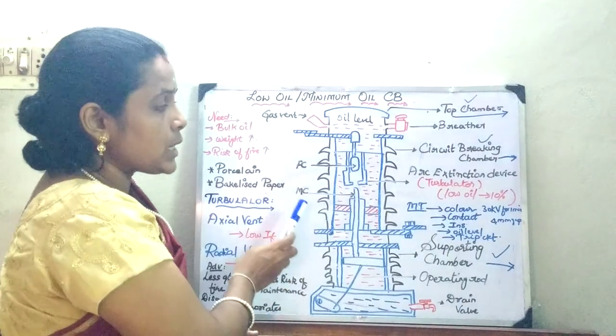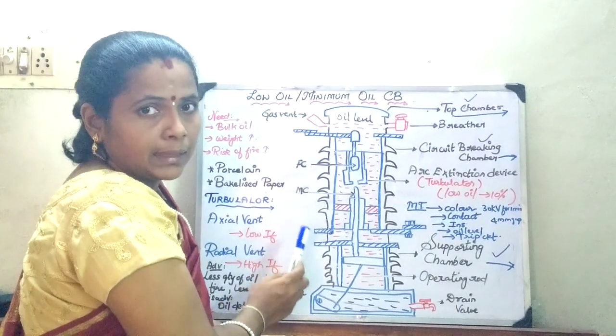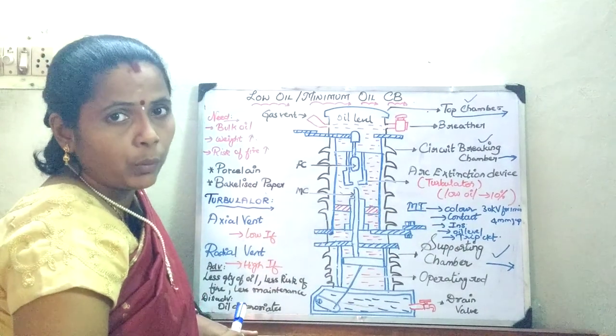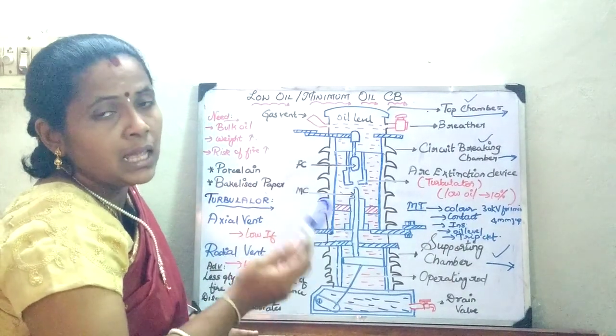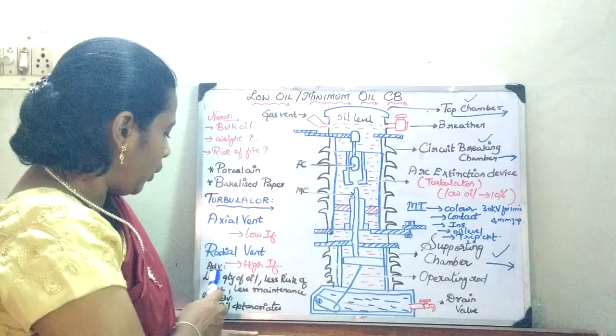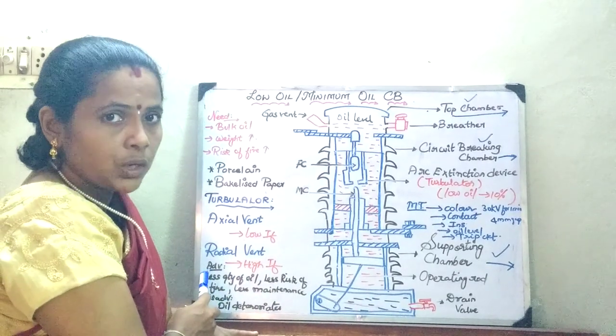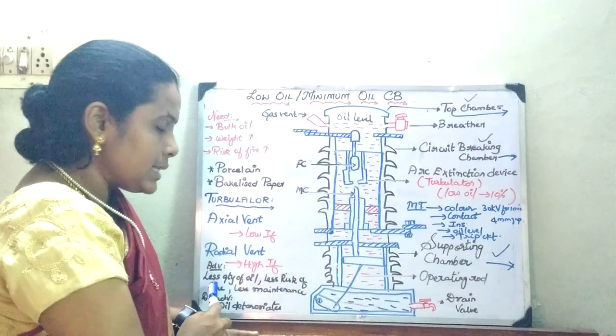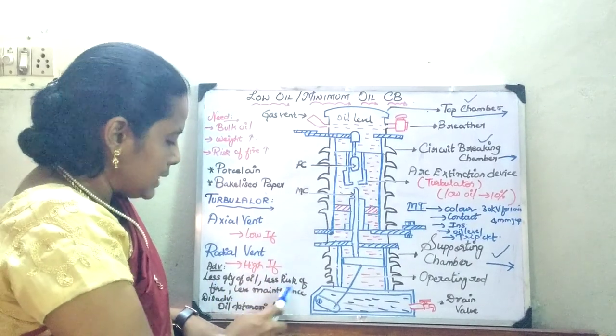When I say it has a low oil circuit breaker, we are just going to use only 10% of the oil which we use in bulk oil circuit breaker. Thereby you are going to use less quantity of oil. When I use less quantity of oil, there is going to be less risk of fire and less maintenance.